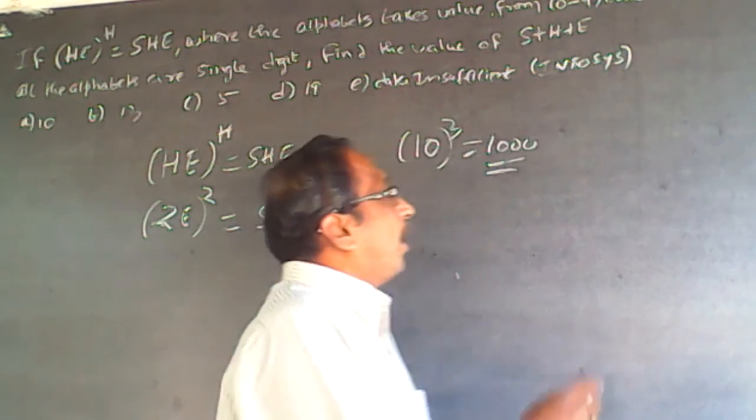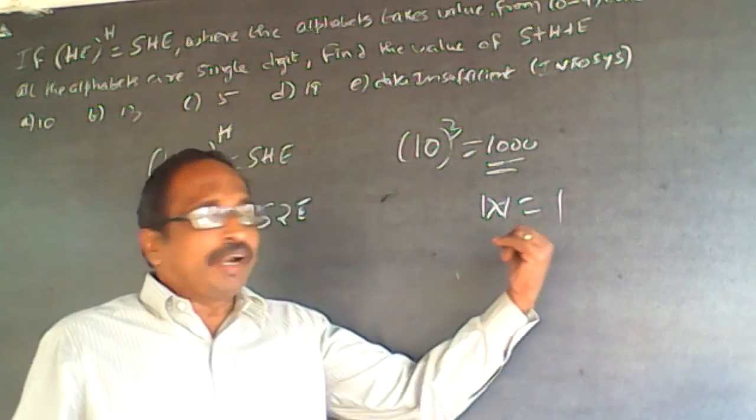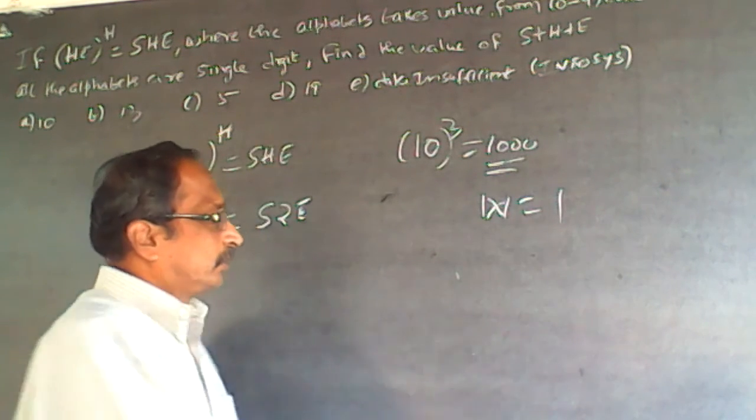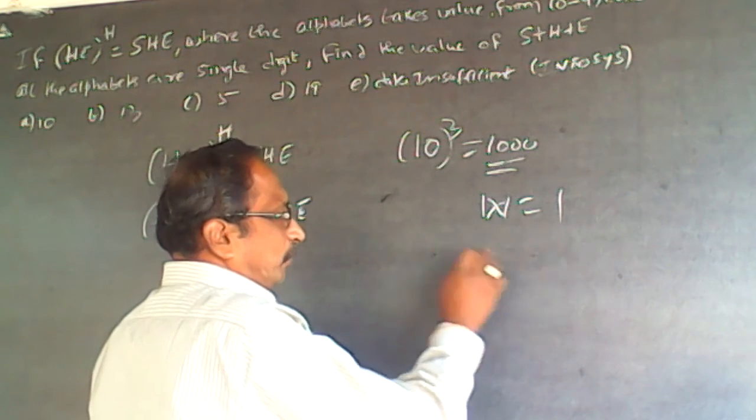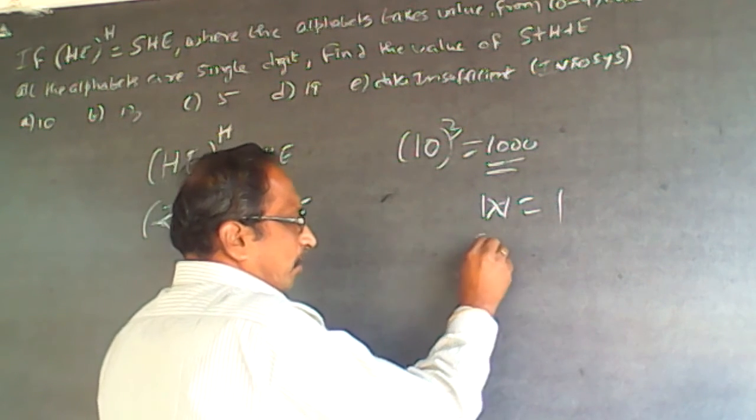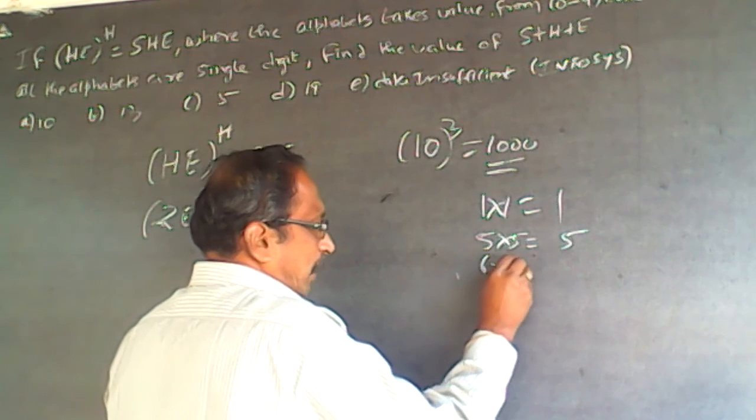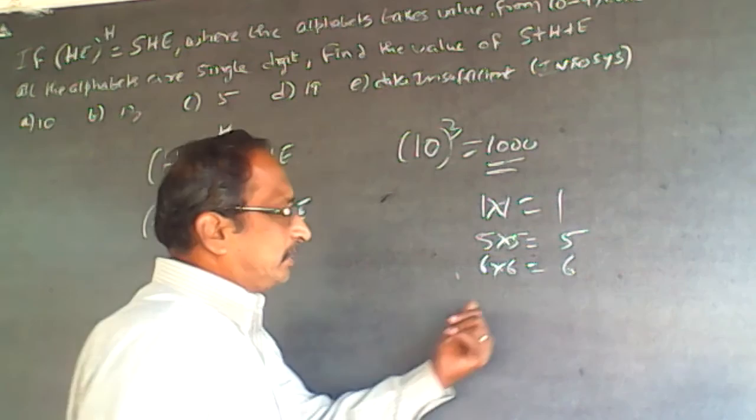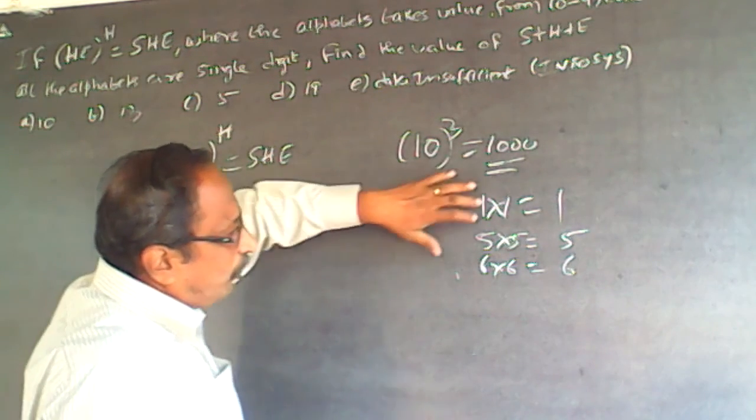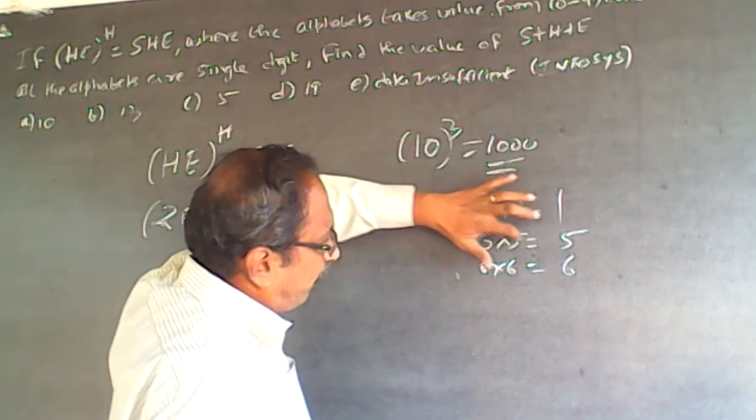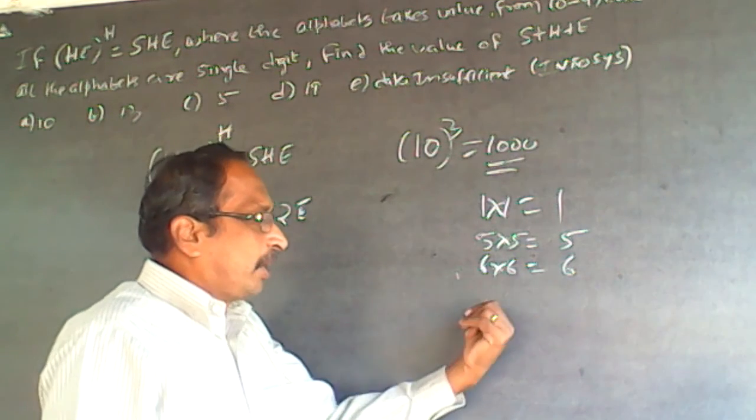For example, 1 into 1 will have the same ending number 1. 2 into 2 will be 4, not possible. 3 into 3 is 9, not possible. 4 into 4 is 16, not possible. 5 into 5 will have ending number 5. 6 into 6 will have ending number 6. 7 into 7 is 49. 8 into 8 is 64. 9 into 9 is 81.